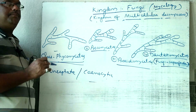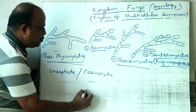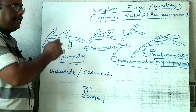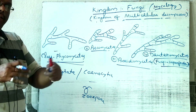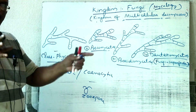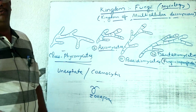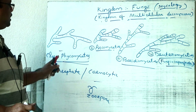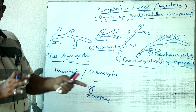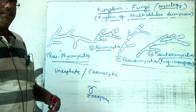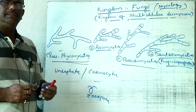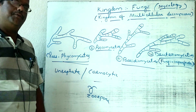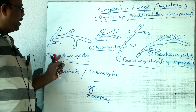Phycomycetes reproduce both asexually and sexually. Their sexual reproduction takes place in a well-mannered way just like algae. So they are commonly known as algae-like fungi. 'Phyco' means algae and 'mycetes' means fungi — fungi that show algal characters in their sexual reproduction are placed in the class Phycomycetes.